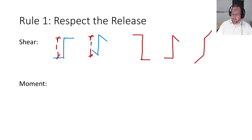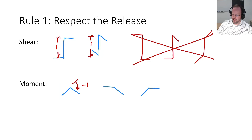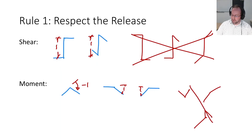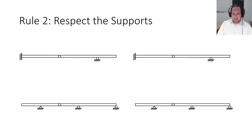For moment we similarly can only have a peak, and the change in slope must be minus one. The two alternatives are: a horizontal line with a slope of one going down, or a slope of one coming in then a horizontal line. Things not allowed for moment: a valley, two increasing slopes, or any kind of jump. Our second rule is to respect the supports — your influence line will always have a value of zero when passing through a support, and for a fixed support it has both a value of zero and a slope of zero.